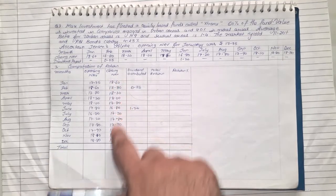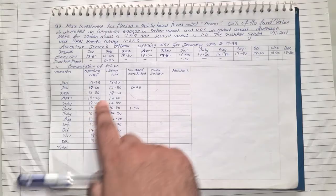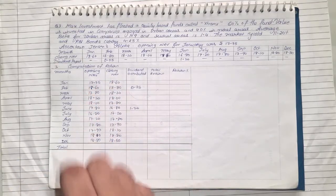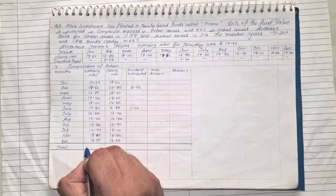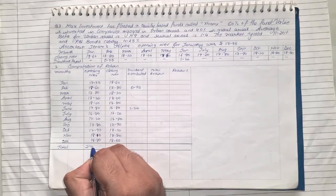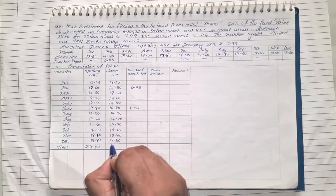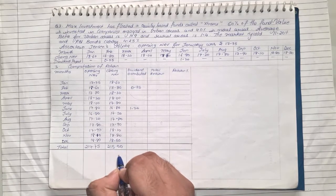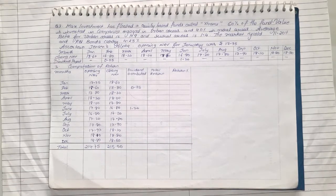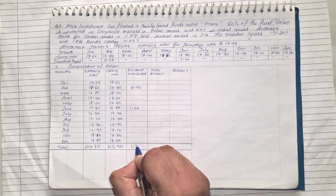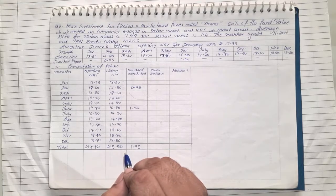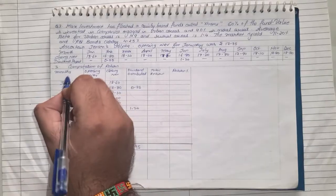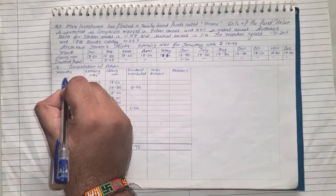We need to just fill up all the values first. Whatever was closing of the previous month will become opening of the next month. Once you have got the opening closing all the values, total it up. So opening NAV total comes to 214.75 and closing it will be approximately 215.50. Dividend total is 1.95.